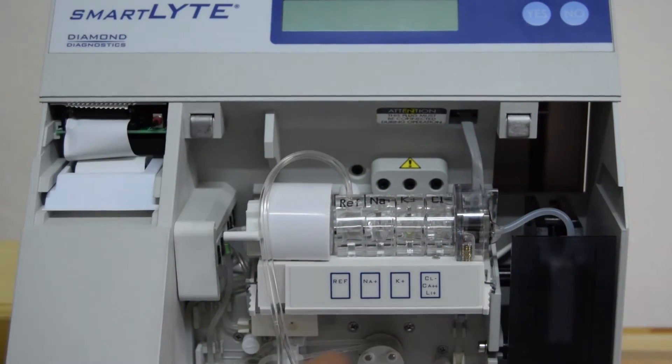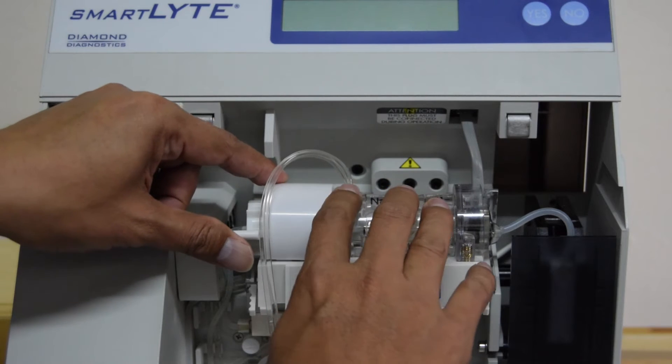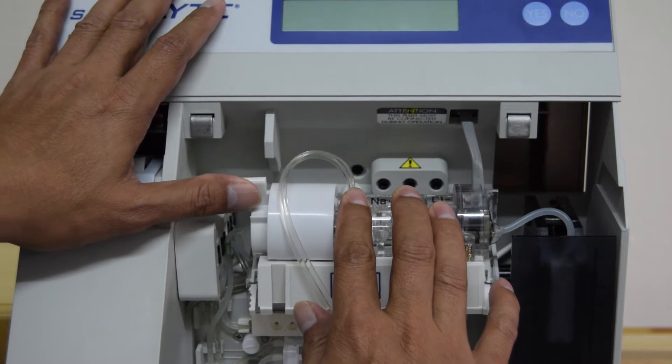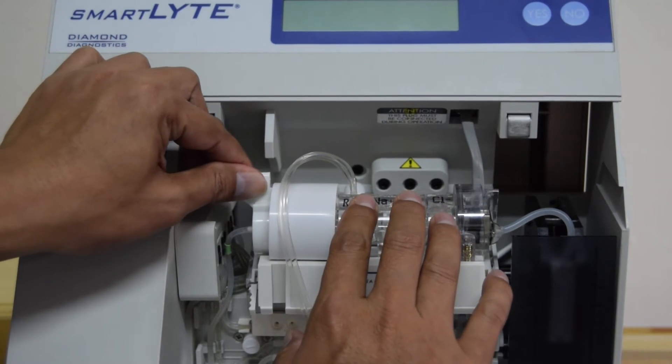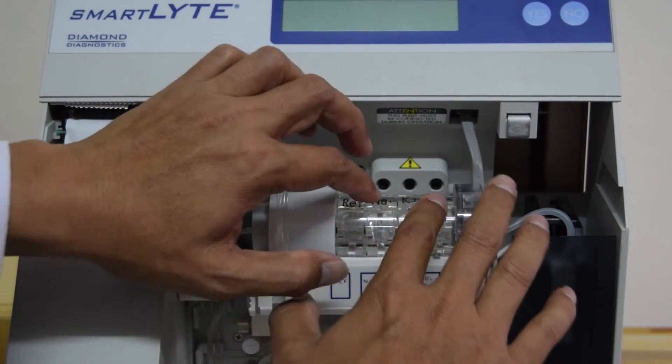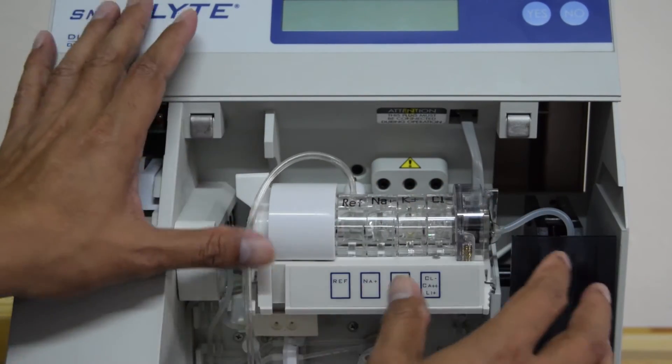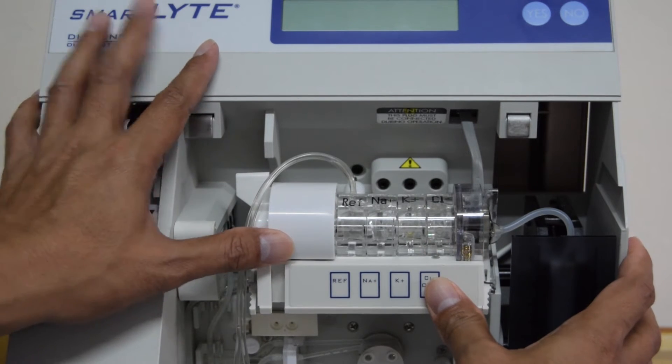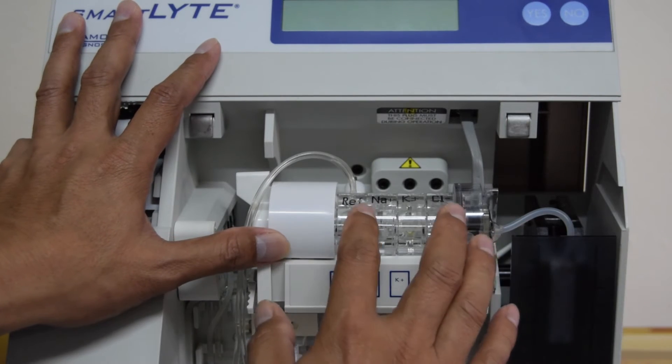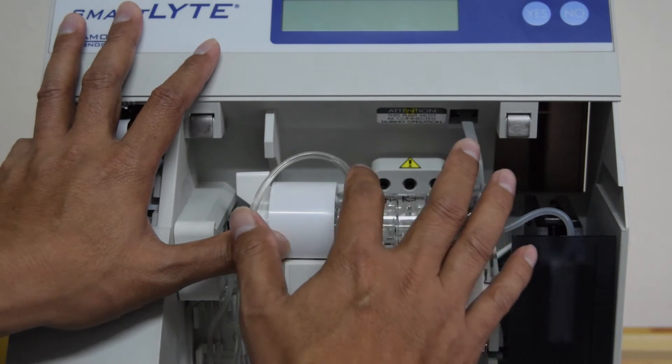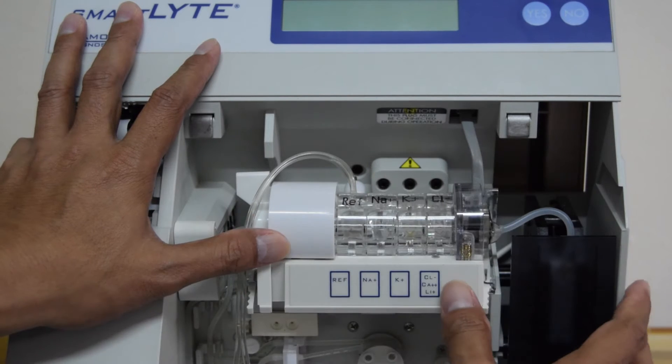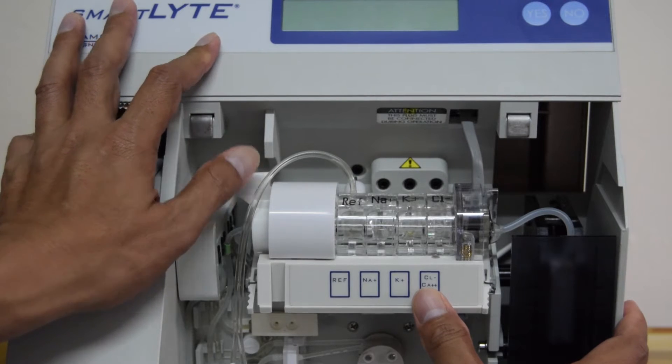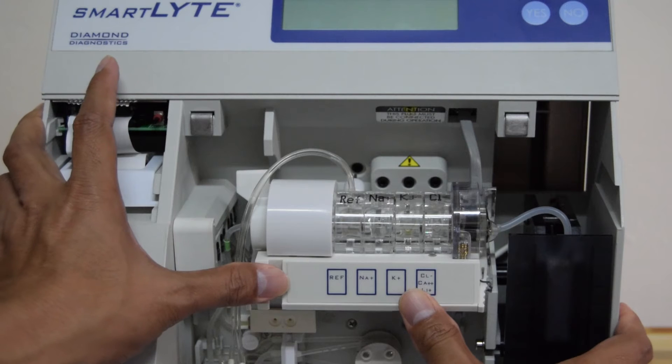Setelah semua terpasang, keempatnya. Perlahan-lahan kita tutup tuas yang sebelah kiri. Tutupkan perlahan. Sambil melihat ke depan ke alat elektroda. Dimana ada sensor elektroda yang ada pada tiap elektroda ini harus tepat masuk pada lubang yang sudah ada di dalam. Jadi, kita tidak perlu merapatkan sekaligus. Kita pelan-pelan saja. Setengah. Terus kita majuin pelan-pelan.